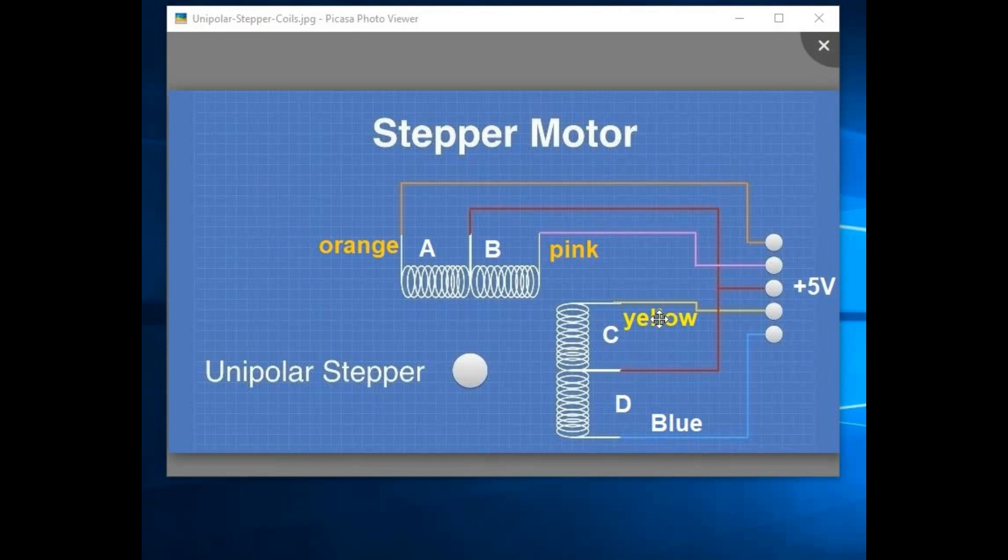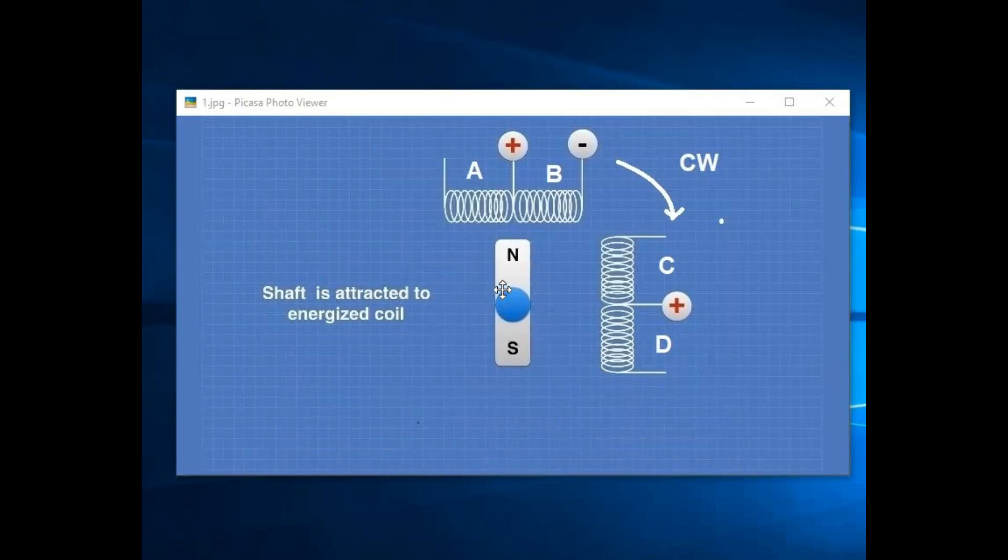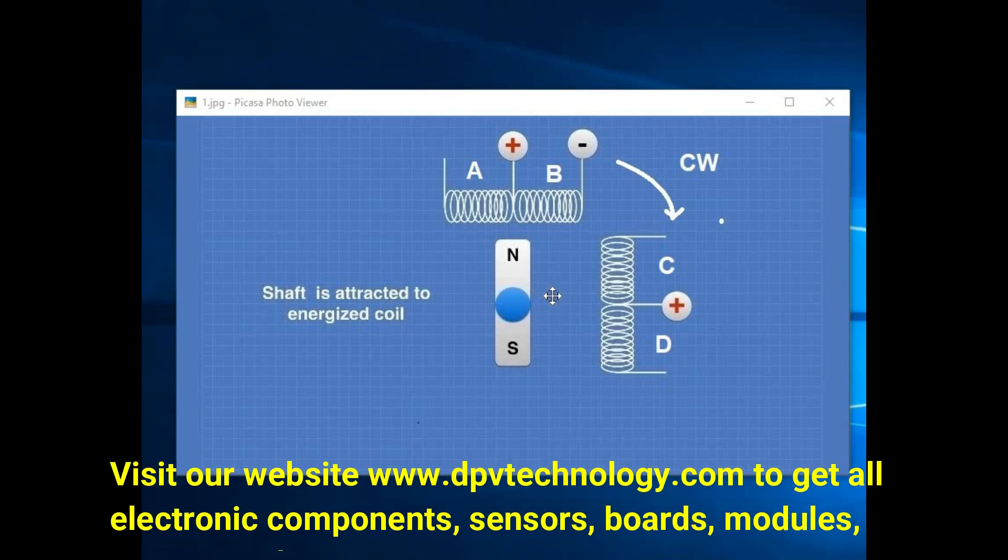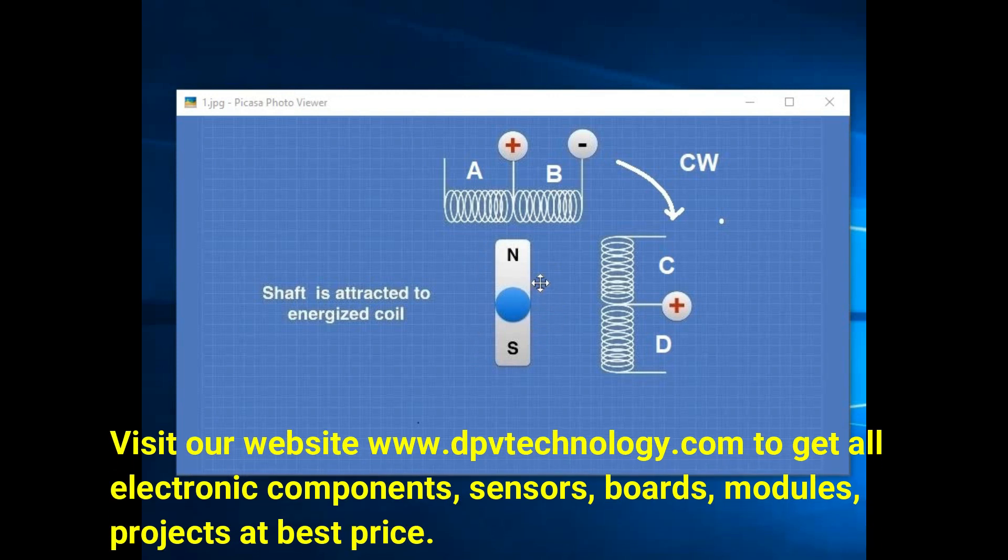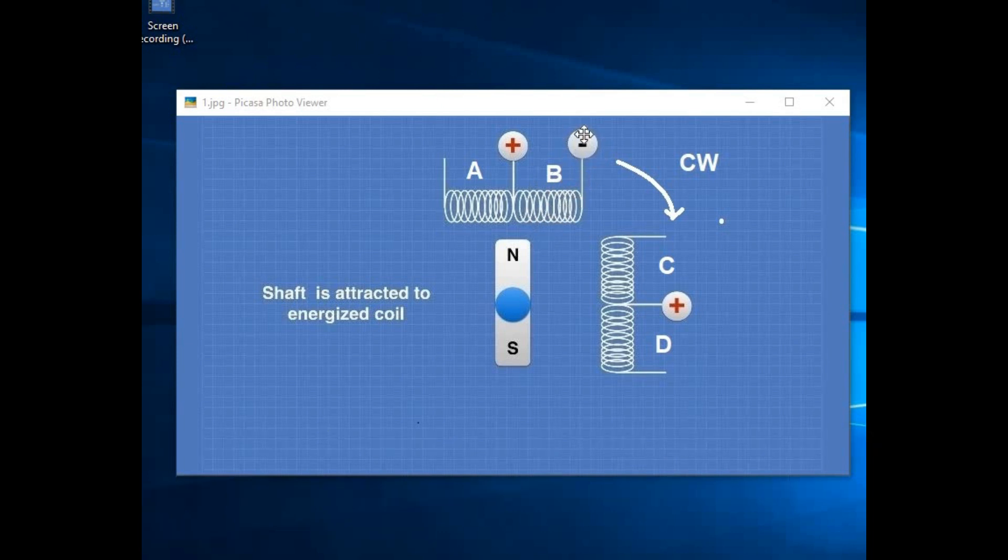The rotor of the stepper motor consists of a permanent magnet with south and north pole as shown in this picture. A stepper motor can be made to rotate only if the coils are energized in a logical sequence. When the coils are energized, magnetic field is produced around it.